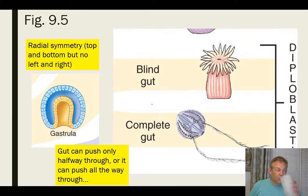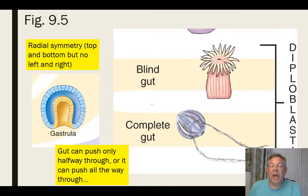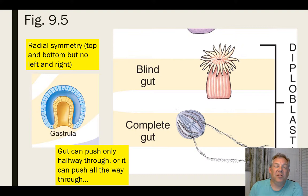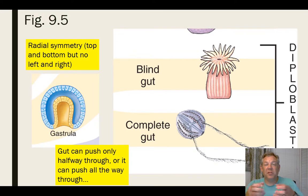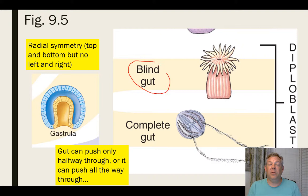The diploblasts are a group of organisms that shows radial symmetry — they have a top and a bottom, but no left and right. We can also look at how their gut develops. When that gastrula forms, sometimes it pushes in and forms a little pocket, but the pocket only goes halfway — it doesn't go all the way through. That ends up being what's known as a blind gut, where this opening is both the mouth and the anus, and food comes in and waste leaves through the same opening. That's seen in things like sea anemones.